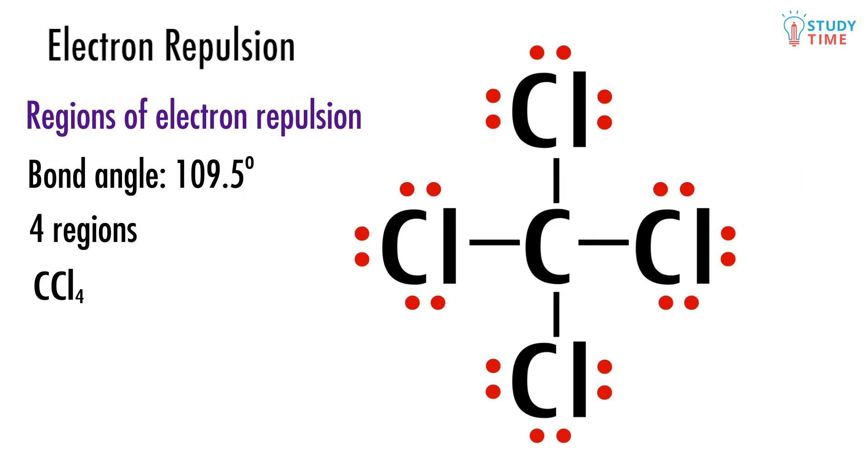Looking at this Lewis structure right here, it's extremely tempting to guess that the bond angle is going to be 90 degrees. But as we mentioned above, it's actually not. It's 109.5 degrees. Remember, the regions of electron repulsion want to get as far away from each other as possible, so a larger angle is always better.